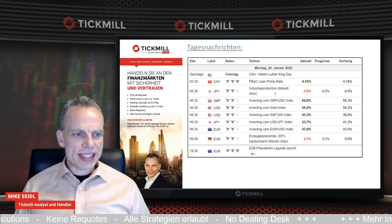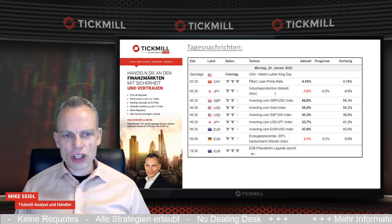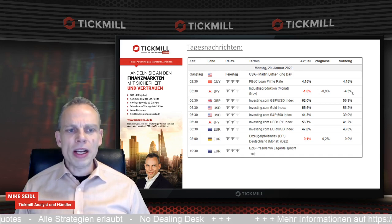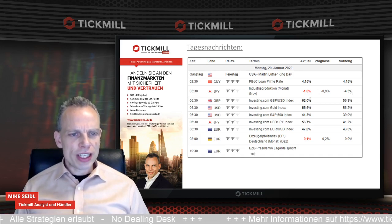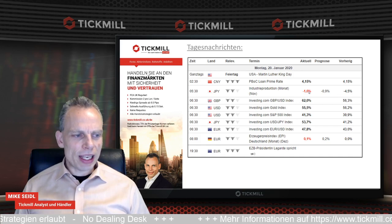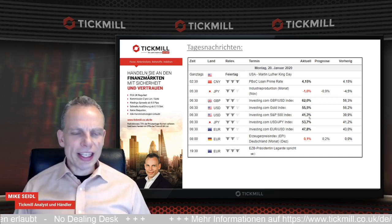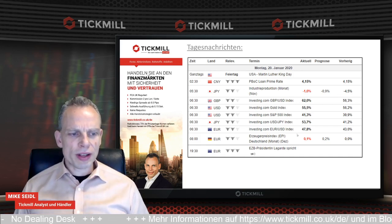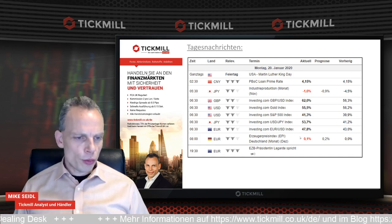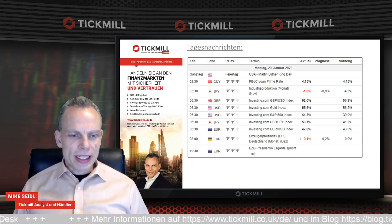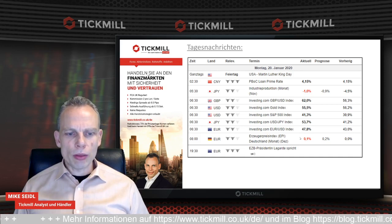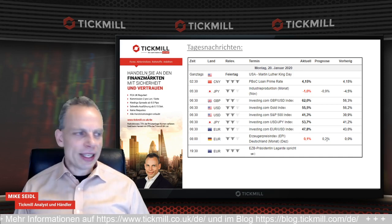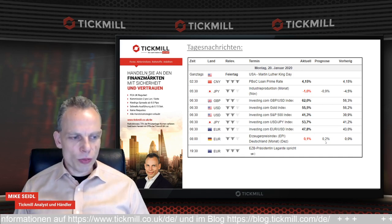Dann gab es aus Japan die Industrieproduktion. Die ist schlechter ausgefallen als erwartet, aber deutlich besser als im vorherigen Zeitraum. Acht Uhr haben wir eine Nachricht aus Deutschland bekommen – das war der Erzeugerpreisindex für den Monat Dezember. Der ist zurückgegangen auf 0,1; die Prognose war eigentlich bei 0,2.